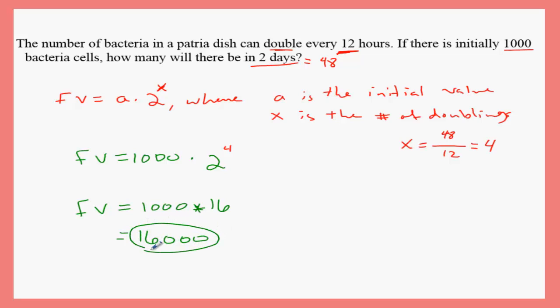Another way to do this one here is use mental math. If there is initially 1000, after 12 hours it doubles every 12 hours, so after 12 hours will be 2000. After another 12 hours, it's not going to be 3000 - we're doubling - it's going to be 4000. Another 12 hours is going to be 8,000.